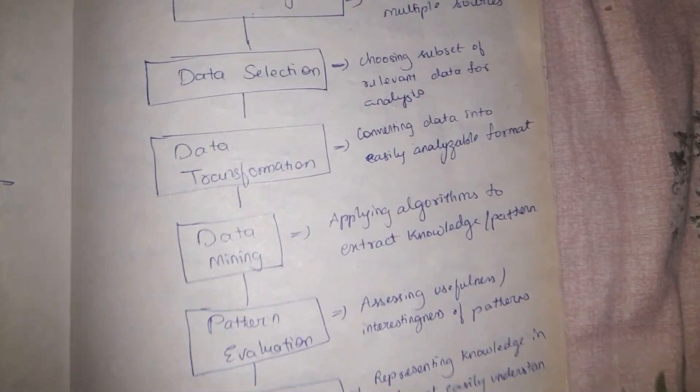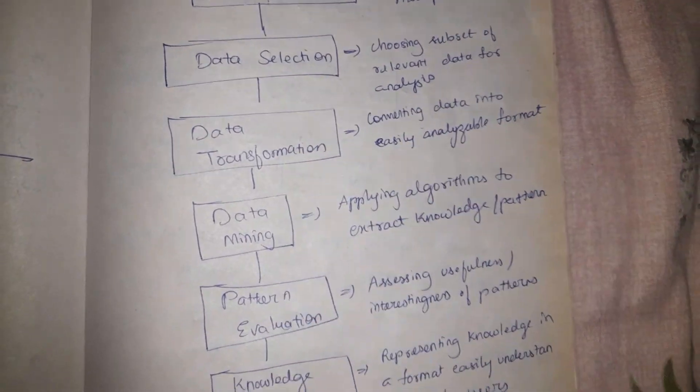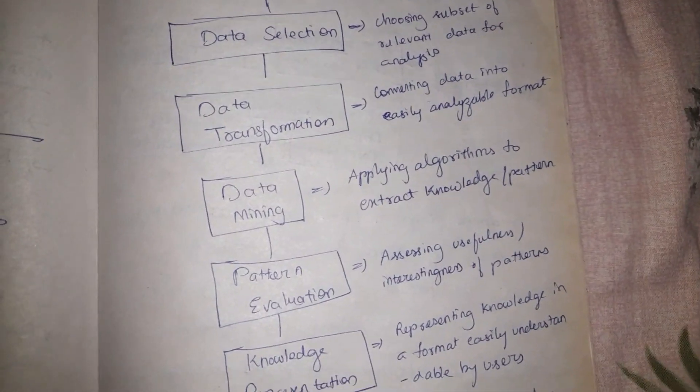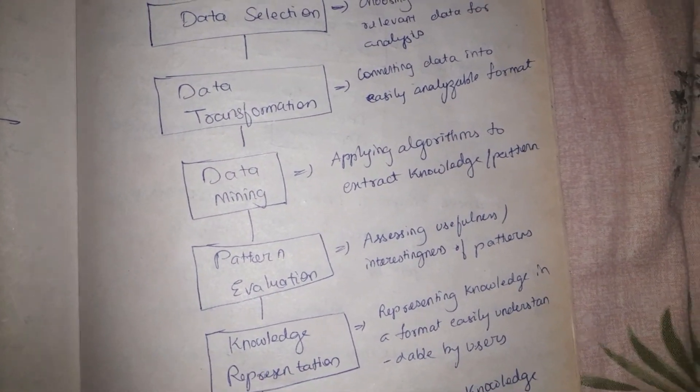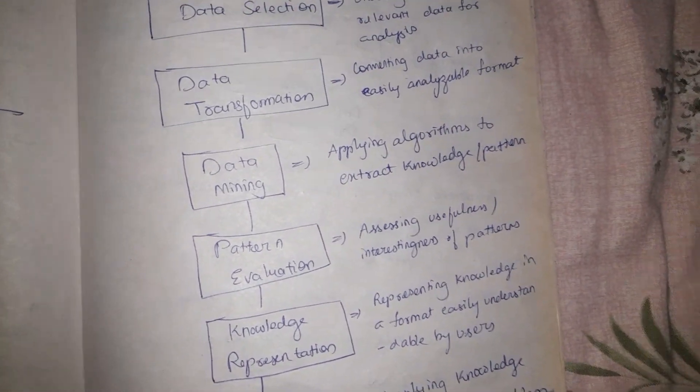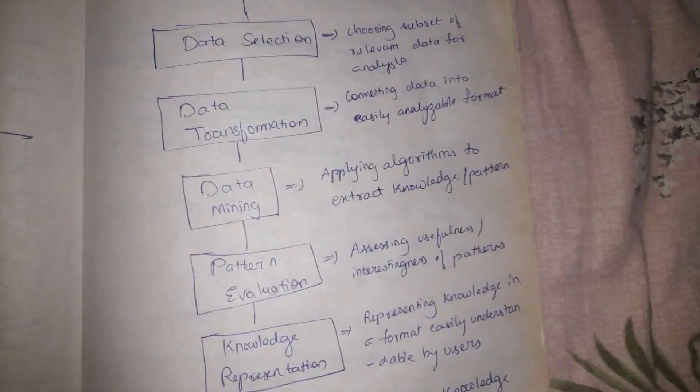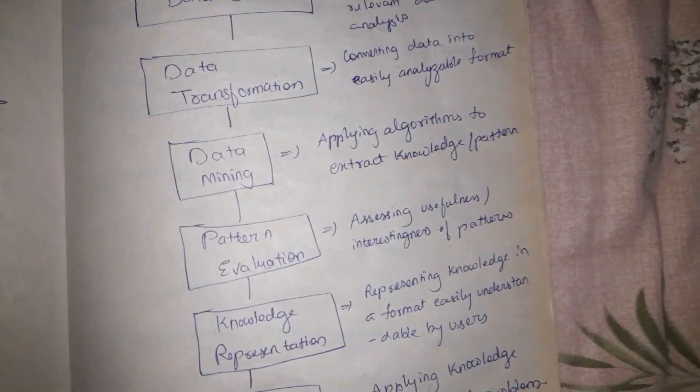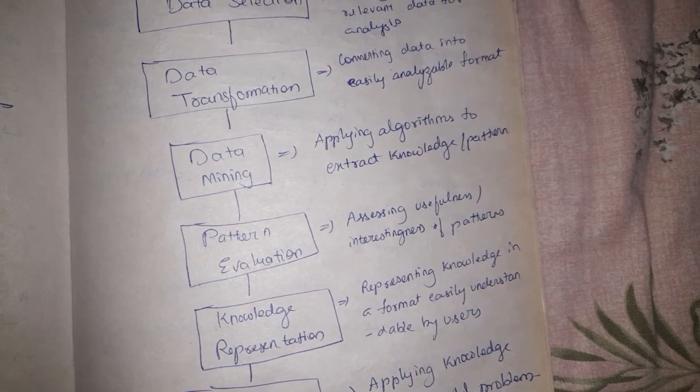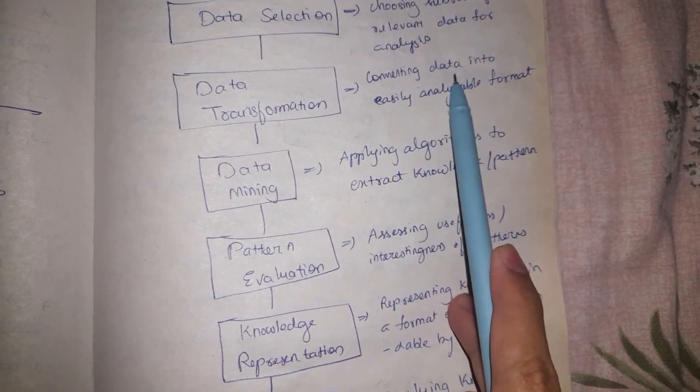The next step is data transformation. We have collected data which can be useful to us and we have disregarded all other data which are not useful to us. Now we need to make this data into a more understandable format so that we can perform analysis on it. That is done in data transformation - converting data into an easily analyzable format.